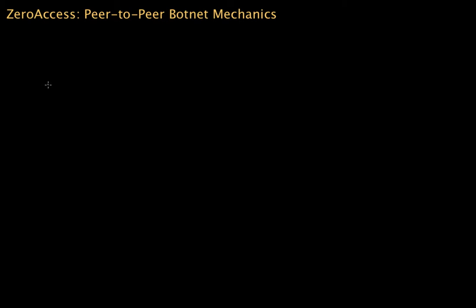This is the third video in a series on the Zero Access Trojan. In the first video, I gave an overview of the Trojan and talked about what it does at a high level. In the second video, I talked about what initially happens on installation and how the Zero Access Trojan stays resilient. In this video, I'll talk a bit more about the underlying peer-to-peer botnet aspects of Zero Access.